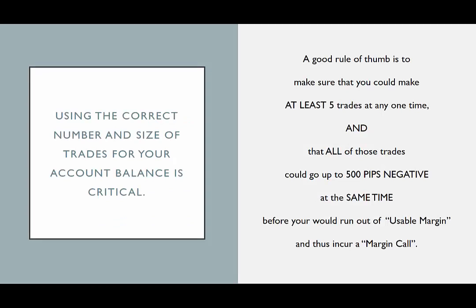Using the correct number of trades and the correct size of trades for your account balance is critical to your success as a Forex trader. A good rule of thumb is to make sure that you could make at least five trades at any given time and that all of those trades could go up to 500 pips negative at the same time before you would run out of usable margin and thus incur a margin call. I'm not suggesting that you should ever allow your trades to go 500 pips negative or that you should let your account get anywhere close to a margin call, but if you trade using this formula, your account will always have enough usable margin cushion so that you will have the time you need to construct a mitigation plan for trades before they get into serious trouble.